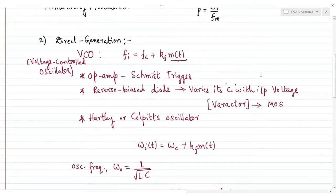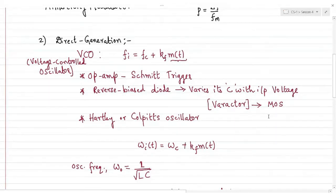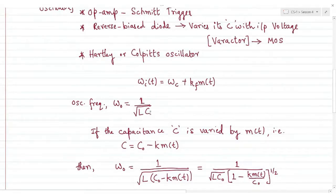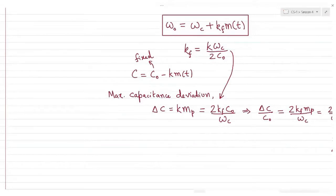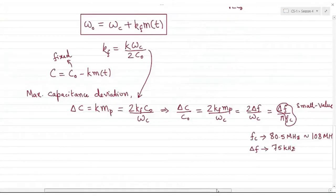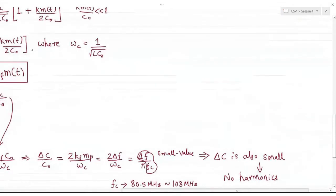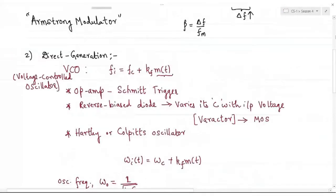This modulation can be implemented using a voltage-controlled oscillator in configurations such as an op-amp in Schmitt trigger mode, varactor diodes or MOS varactors, or a Hartley-Colpitz oscillator. We discussed the Colpitz oscillator where we varied the capacitance of the tank circuit in accordance with the message signal, thereby changing its oscillation frequency. We also concluded that the capacitance deviation delta-C doesn't contribute much to harmonics or modulation problems.